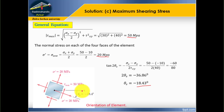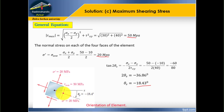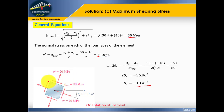The diagram shows the orientation from the x-axis of the clock is −18.43 degrees. This is the orientation of the maximum shearing stress. The corresponding normal stress — the average — is 20 MPa, acting outward on all faces.